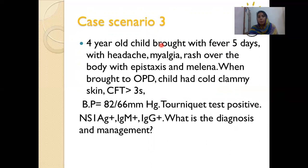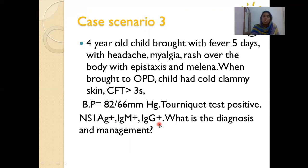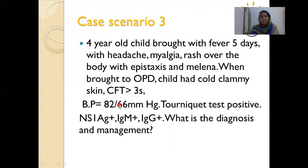Scenario 3: A 4-year-old with fever for 5 days, headache, myalgia, rash, epistaxis and melena. On examination: cold clammy skin, CRT more than 3 seconds, BP 82/66, tourniquet test positive, NS1 antigen positive, IgM positive, IgG positive. Symptom analysis: bleeding manifestations plus cold clammy skin, prolonged CRT, narrow pulse pressure of 16 mmHg — less than 20 mmHg — suggestive of shock. IgG positive with NS1 and IgM positive confirms a second infection. Diagnosis: severe dengue — dengue shock syndrome.